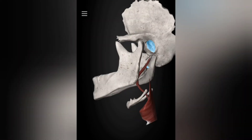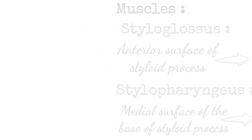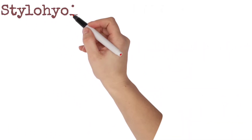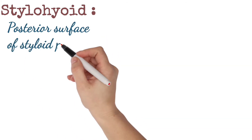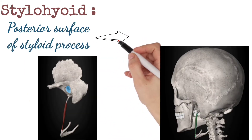Stylohyoid muscle. Stylohyoid extends between the posterior surface of the styloid process and the hyoid bone.